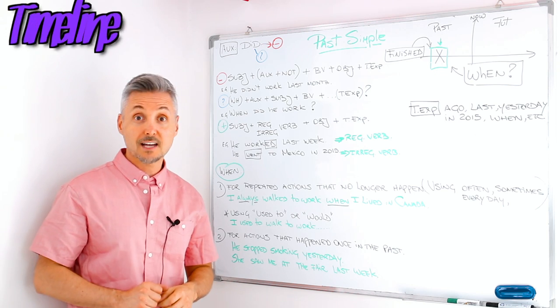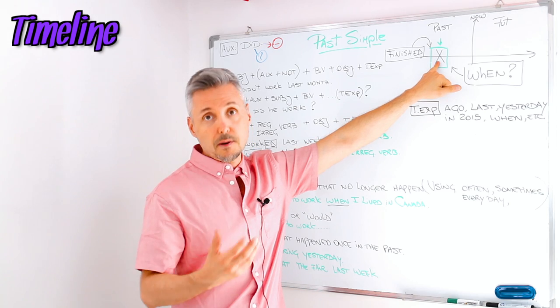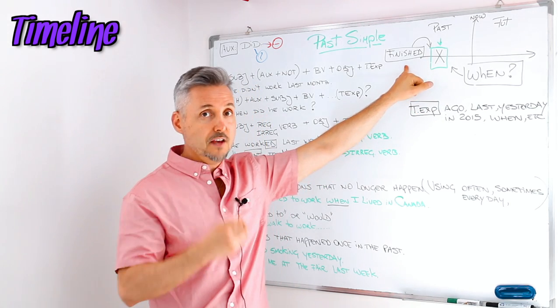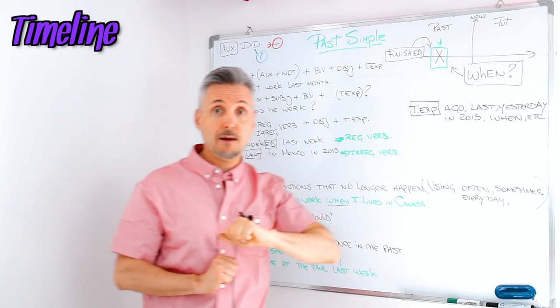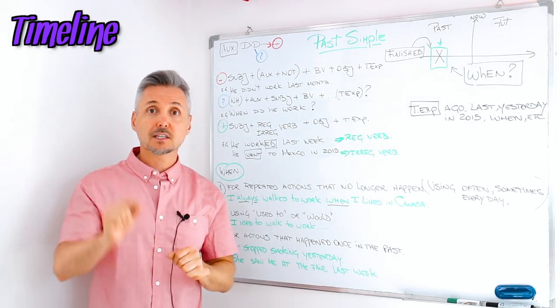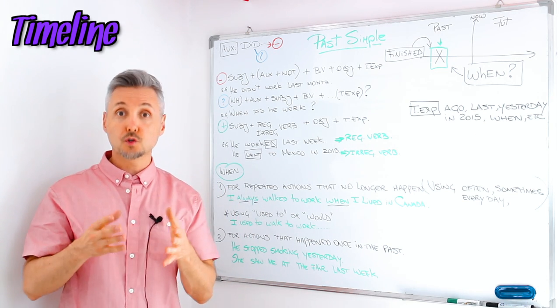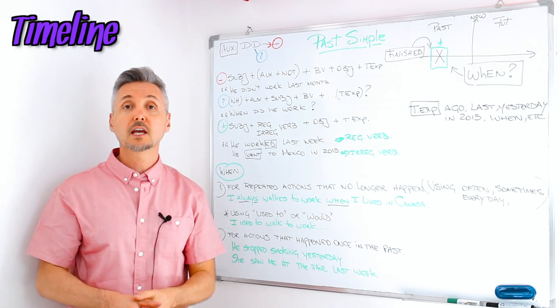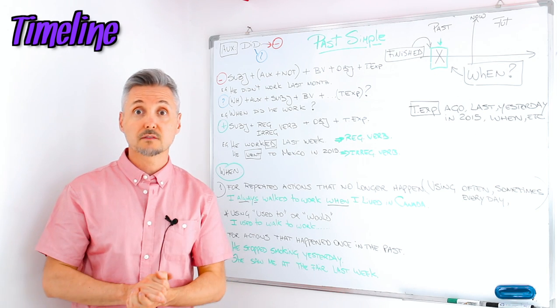So now let's look at the timeline. We see the past simple in the past part of the timeline. And it's a finished action and you know when it happened. So it's very important that you know when it happened. We use the auxiliary to do in the past, so did. When do we use the auxiliary? Only for negative sentences and interrogative sentences.